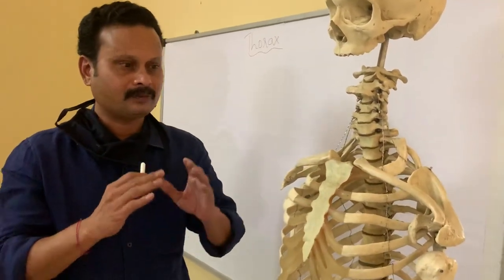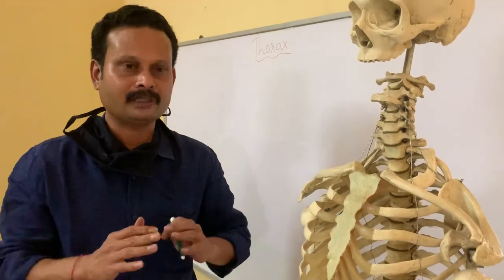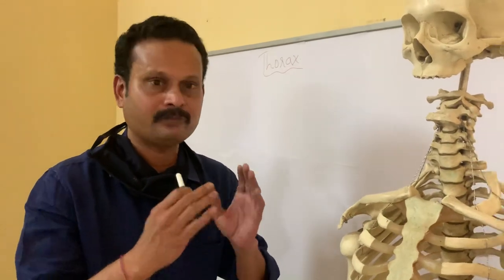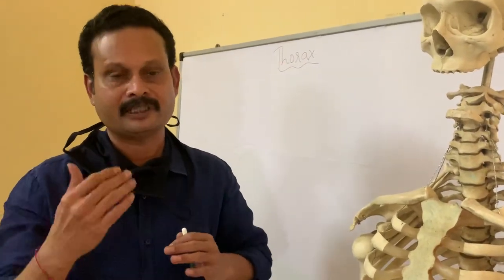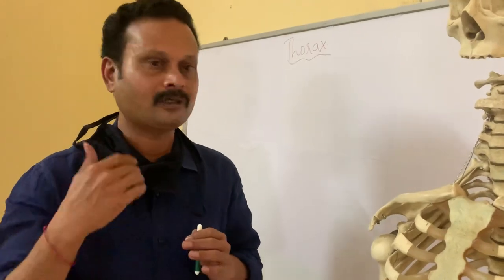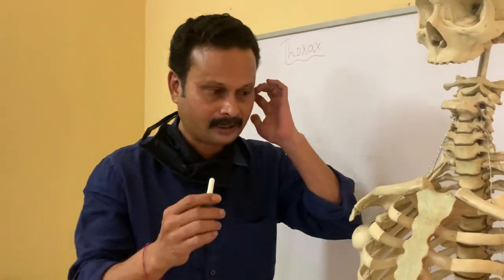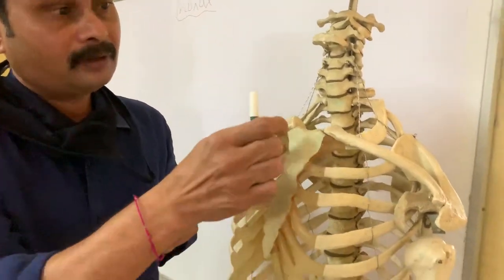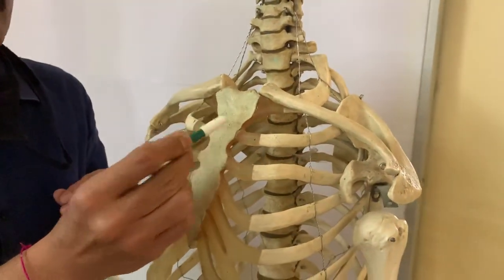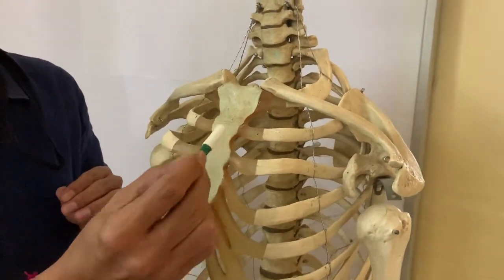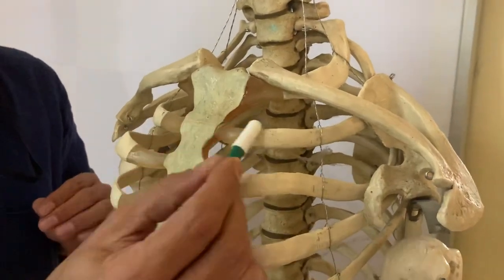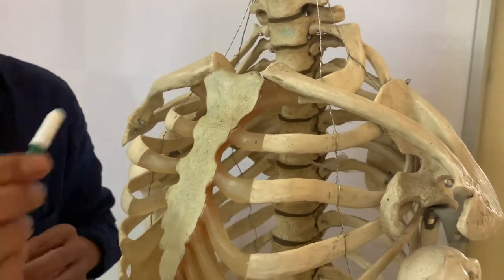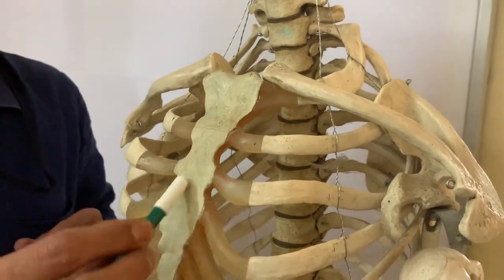The larger organs within the thorax are the two lungs, and the portion between the two lungs is the mediastinum, which contains the heart. Coming back to the thoracic cage — the junction between the manubrium and the body of the sternum, which coincides with the second rib, is called the sternal angle. The sternal angle is the region between the manubrium and the body of the sternum.